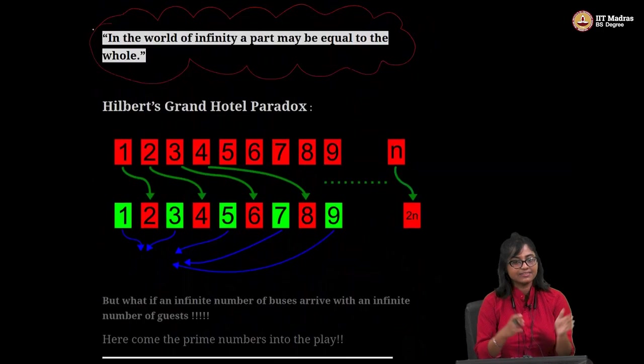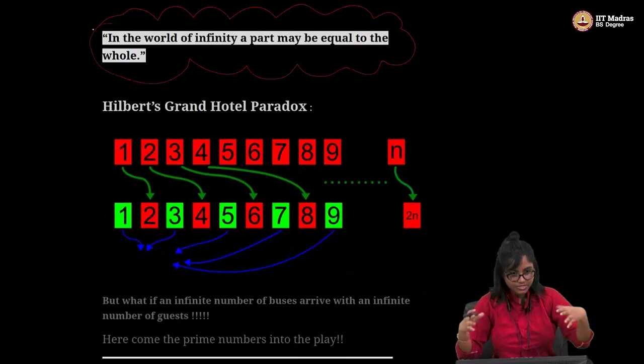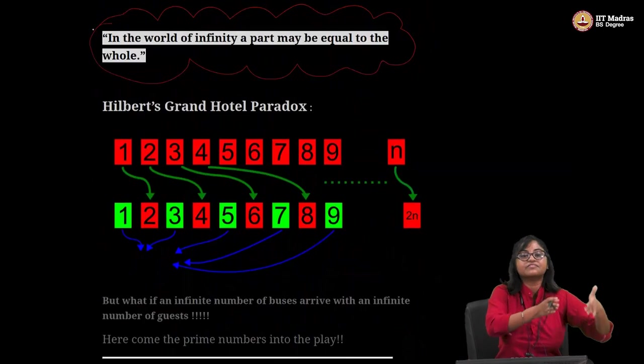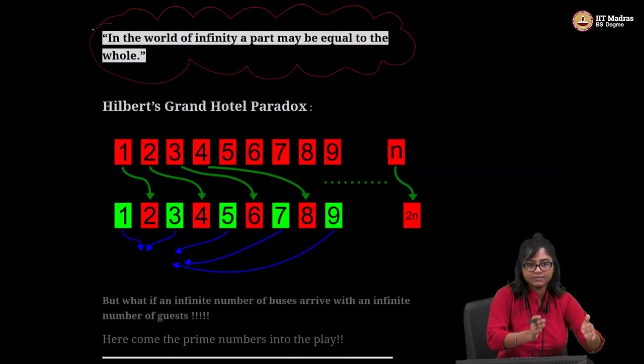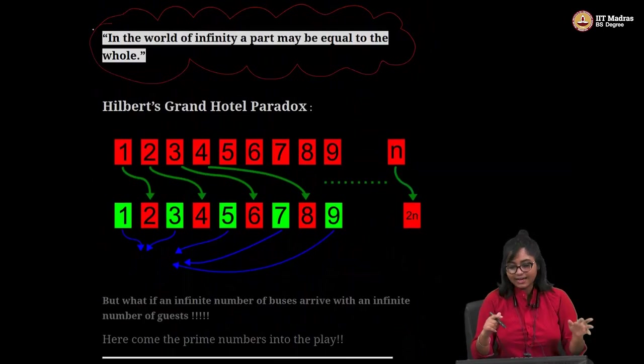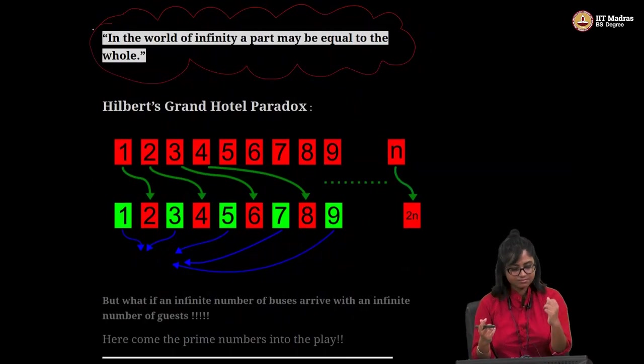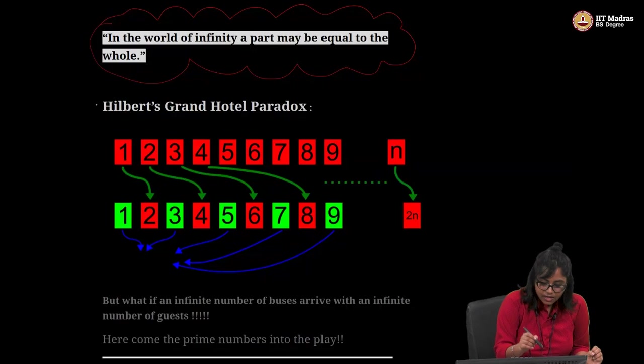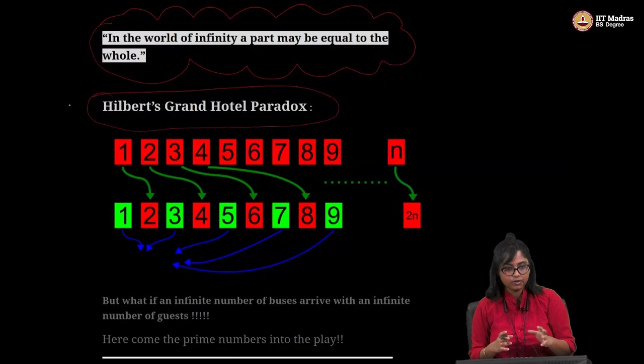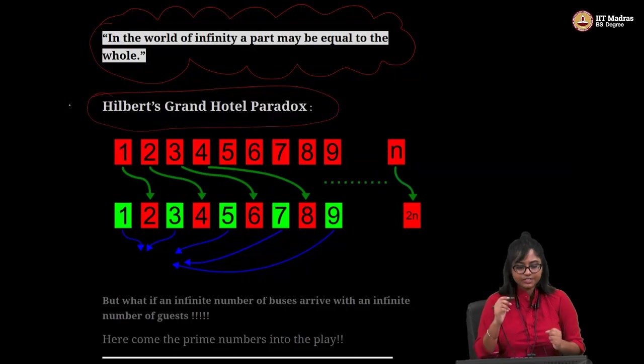He is saying that the set of infinite or like all the numbers together may be equal to only the set of only the even numbers and the odd numbers. And how can we do it? Let's not talk about the proof. Let's visualize it. So here is a great visualization called Hilbert's grand hotel paradox or infinite hotel paradox. There is a very good TEDx video about it. You can watch it.